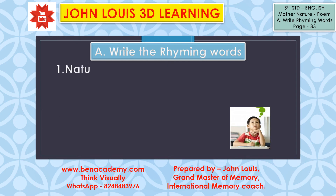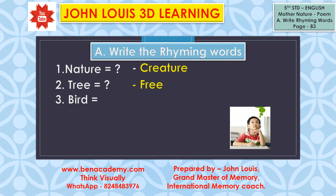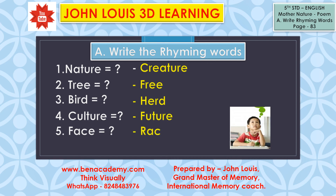Now let's try — you should be able to find out right now without recollecting the poem, since we just learnt it. Nature — what is its rhyming word? Creature. And tree — what is the rhyming word for it? Free. What is the rhyming word for bird? Herd. What is the rhyming word for culture? Future. Face? Race. What is the last one? Best — guest. Now rewind or replay the video again until you get the words correctly, but don't try to look at the answers from your textbook. Just now we learnt it, and we should be able to recollect the poem and find out the answers ourselves — that will be very good for you, and this is how we should practice our learning.